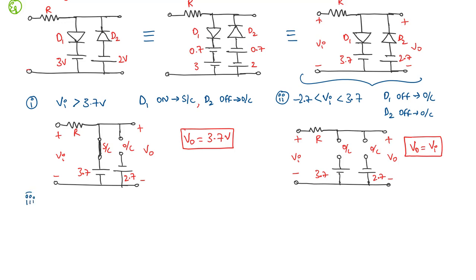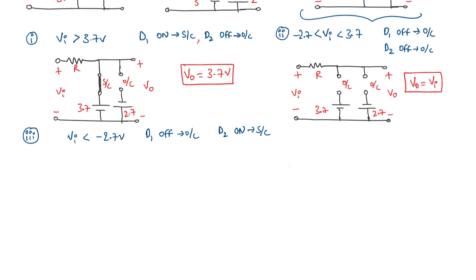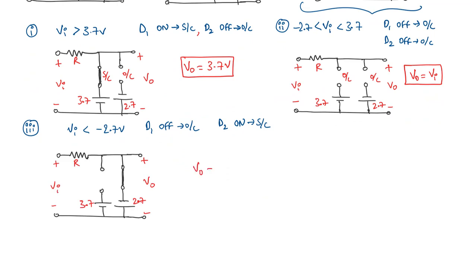For Case 3 where Vi is less than minus 2.7 volts: D1 is off because the P side of D1 is at lesser potential than the N side. D2 turns on because the N side potential, which is the input potential, is less than the potential at the P side of D2. D2 acts as a short circuit and the output voltage equals minus 2.7 volts.